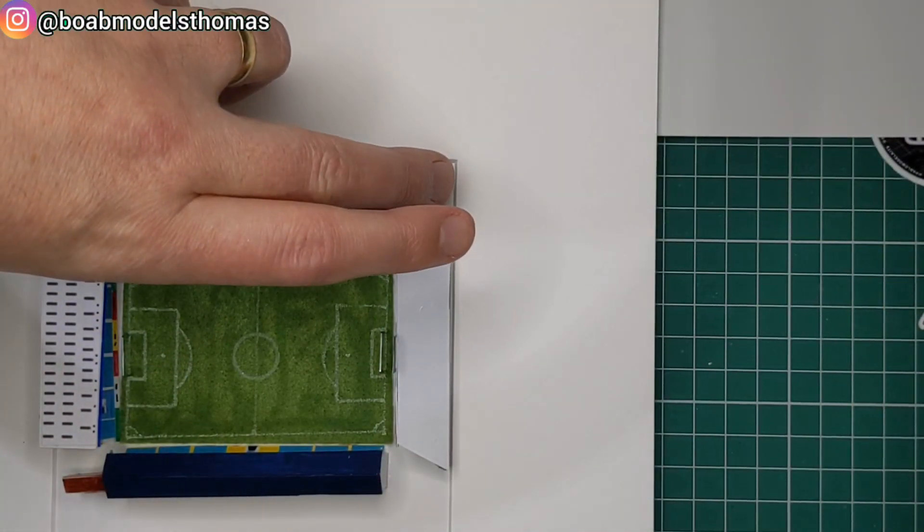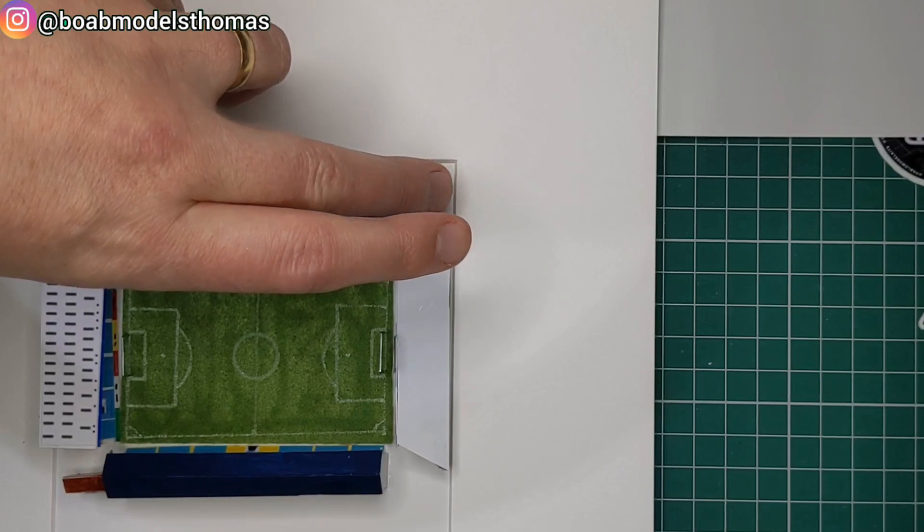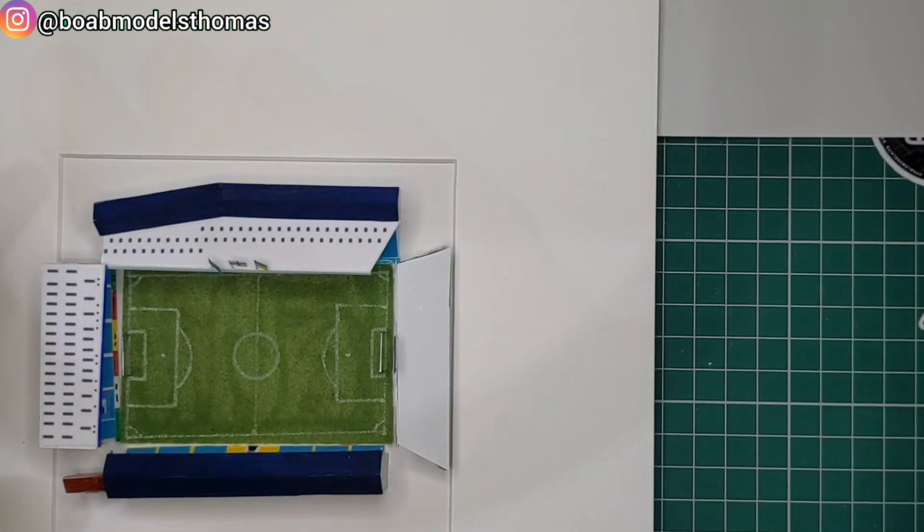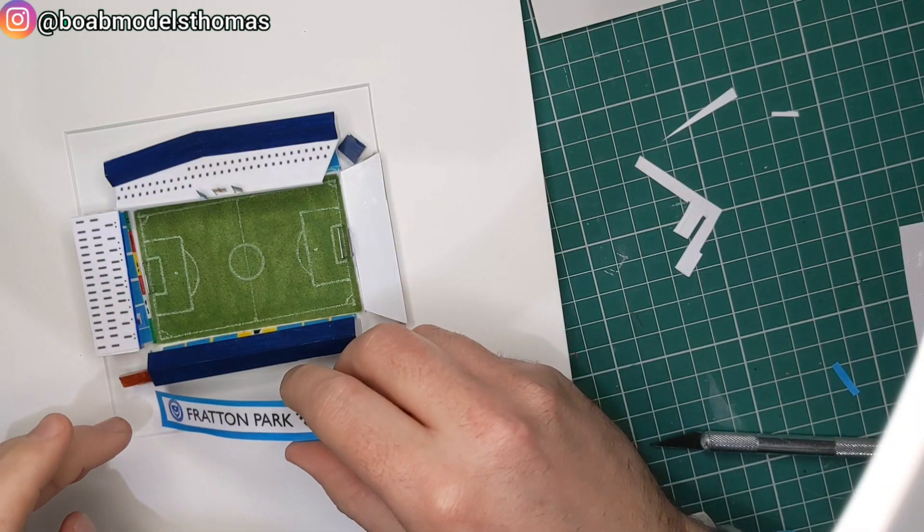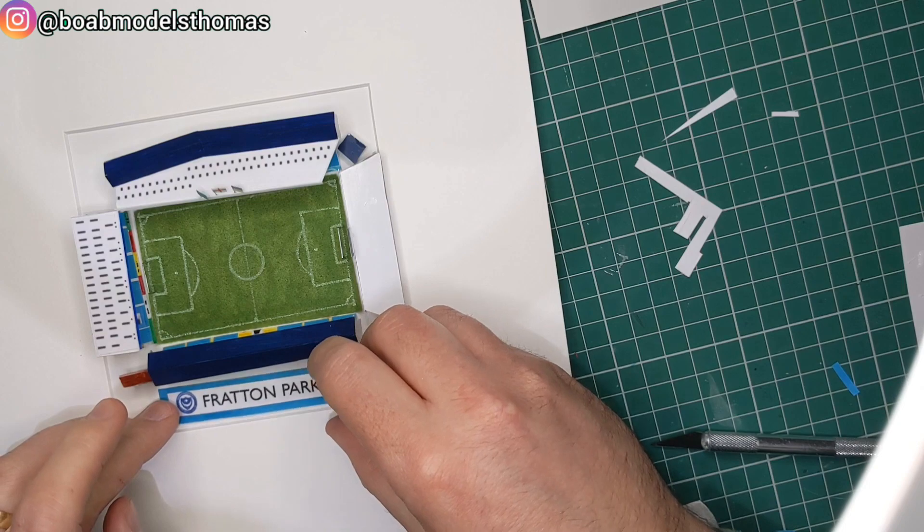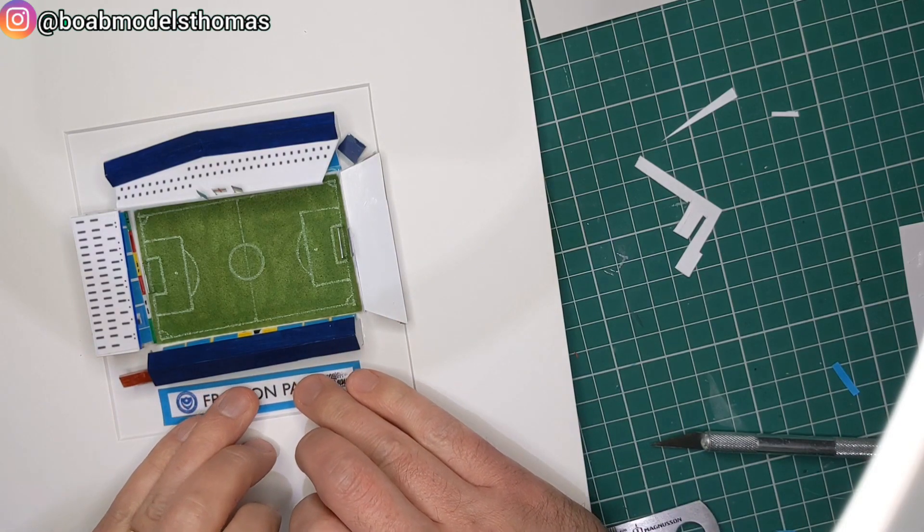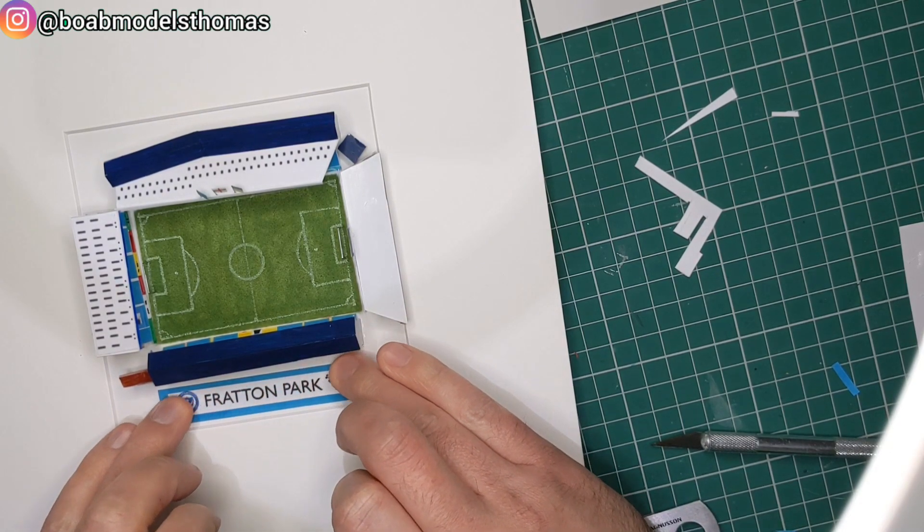I haven't added all of the details of the stand, including the lights on the roof, or the TV camera sections on the South stand, but most of the details are there. And then for the finishing touch, I did a little nameplate at the bottom, with the crest, as well as my own logo, as a sort of signature.